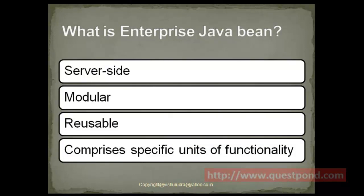After seeing the reason why Enterprise Java Bean came into picture, let's see what it is. An Enterprise Java Bean is a server-side component — it will always reside on the server side. It is a reusable component because it does business processing, and business processing can be shared across various applications. So it's reusable, it's modular in nature, and it performs some specific units of functionality, which in general terms are called business processing or business functionalities. These functionalities are quite complex to be handled directly by a Servlet, hence we have Enterprise Java Bean doing it.